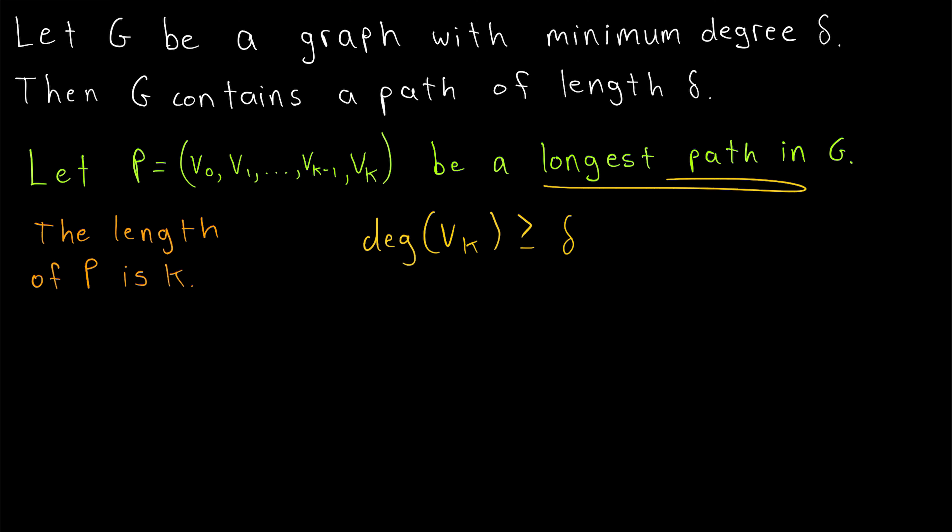So certainly, since P is a longest path in G, the at least delta neighbors of the final vertex vk must lie among the other vertices on the path.